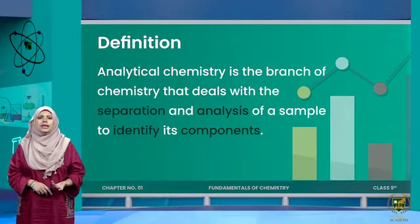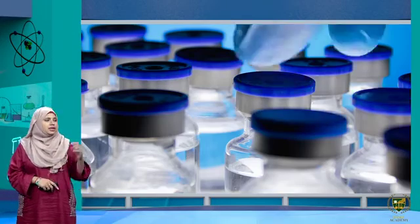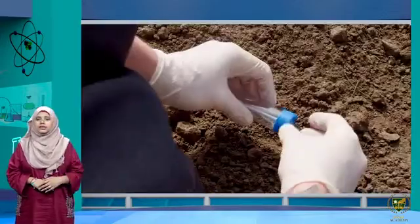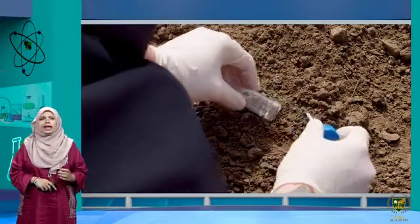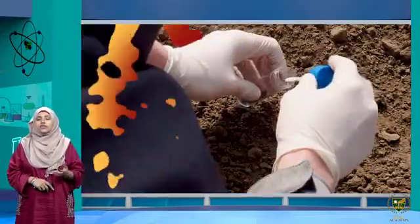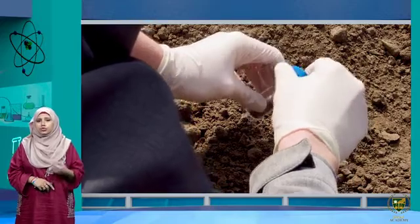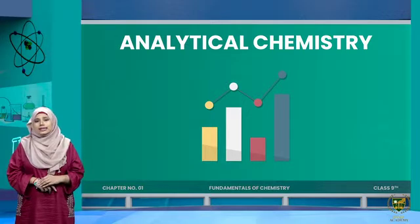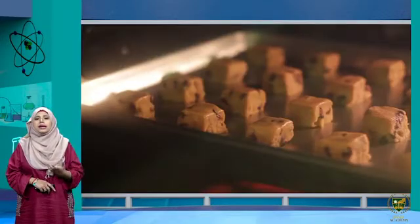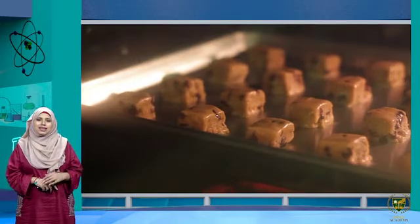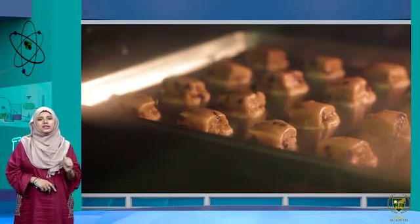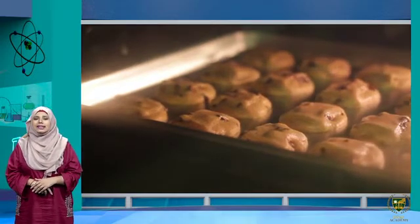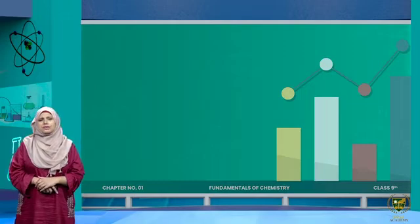When we say 'sample,' it could be anything — a food sample, a medicine sample, blood, water, soil, or anything whose components or composition you want to know. For example, if my sample is a cookie, and I want to know what components are in it and how we can separate them, then that would be studied in analytical chemistry. Analytical chemistry majorly involves two types of analysis.